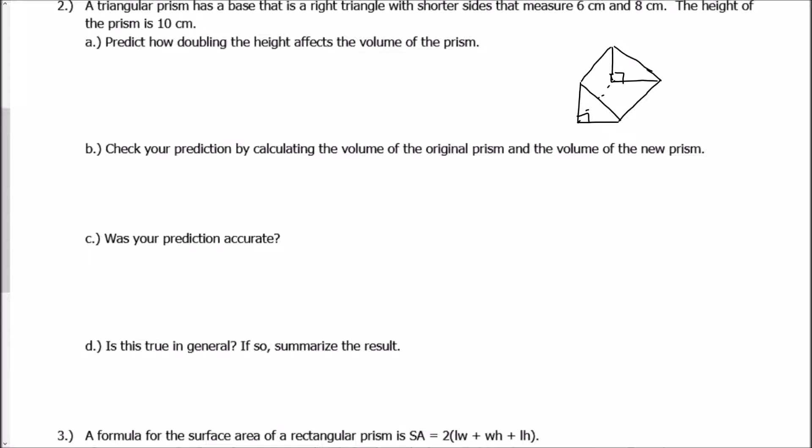And it says that the shorter sides measure six and eight. So this is six, and this is eight, which means these two are my shorter sides because the last side is my hypotenuse. And then the height of the prism itself, which is this length right here, is going to be 10 centimeters.